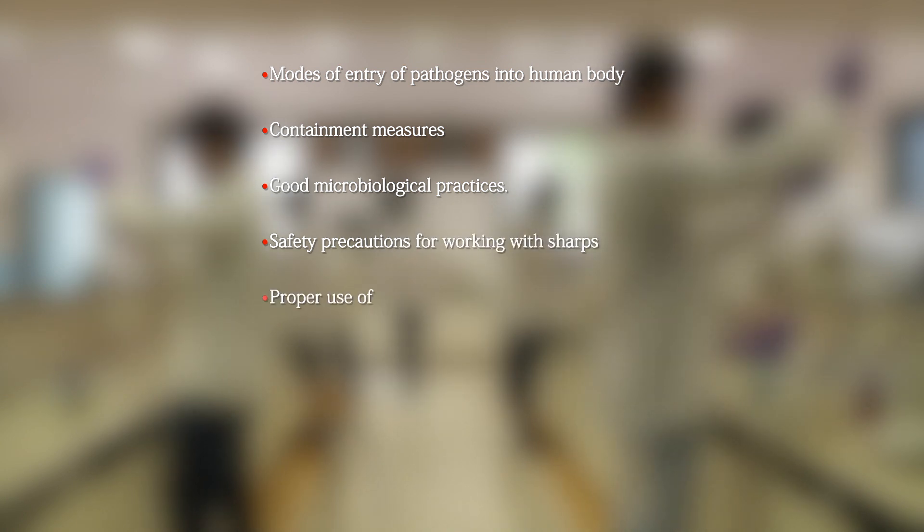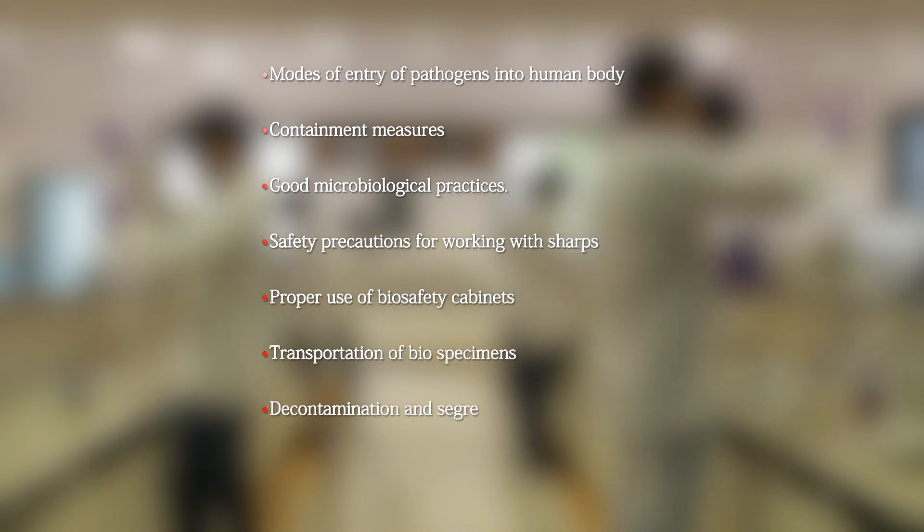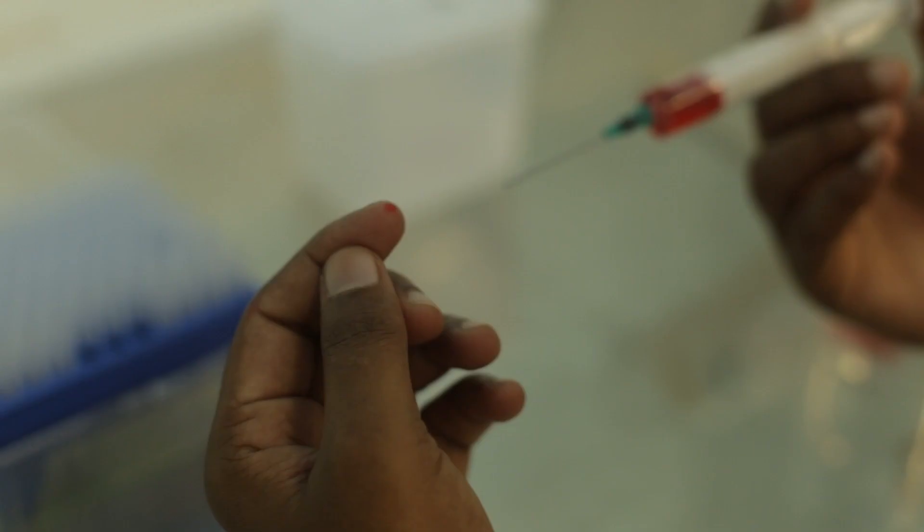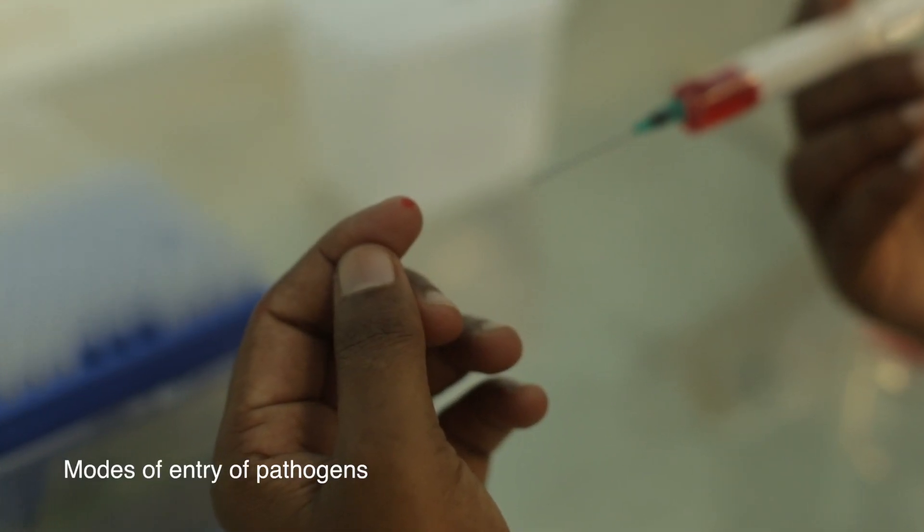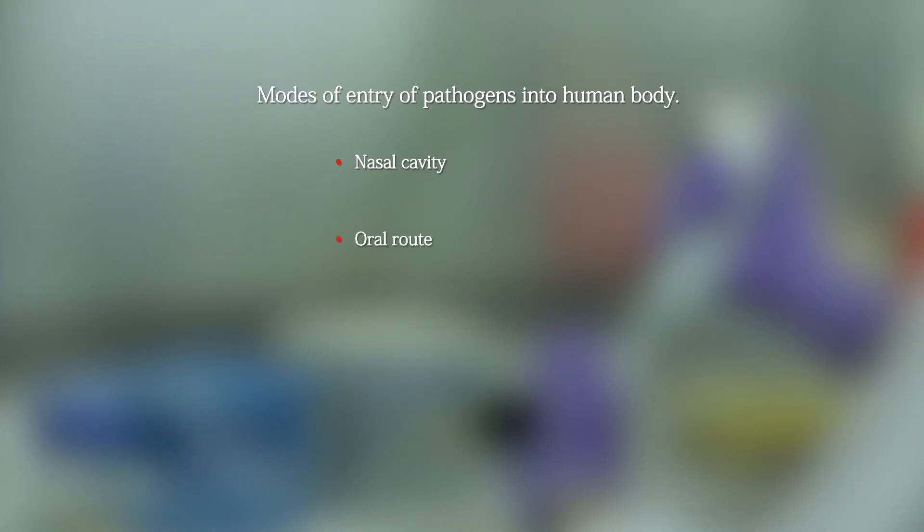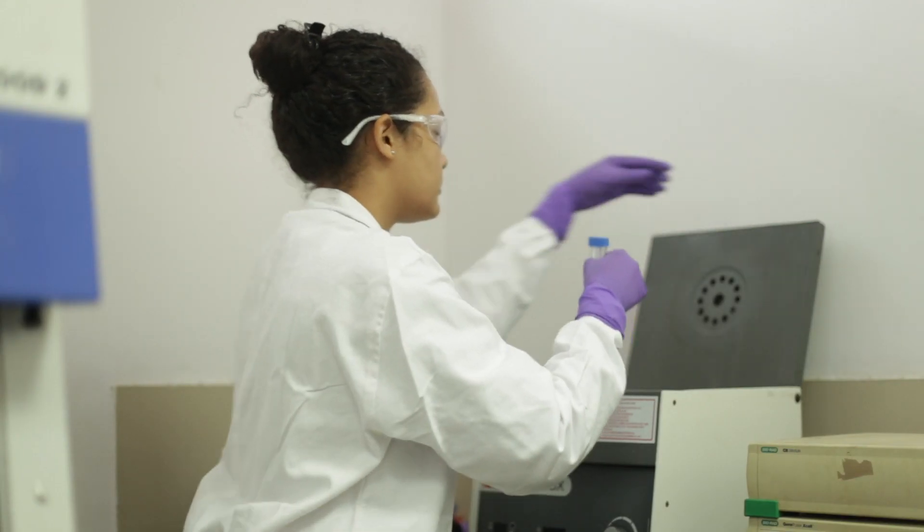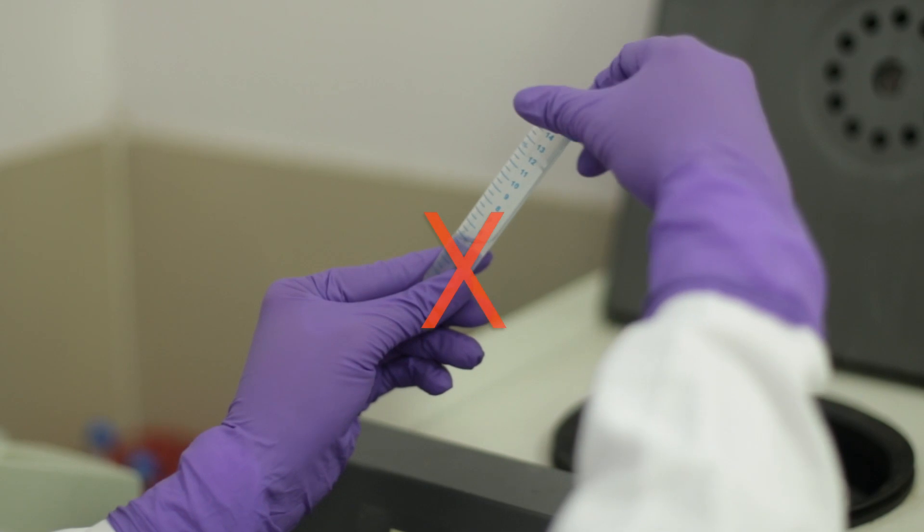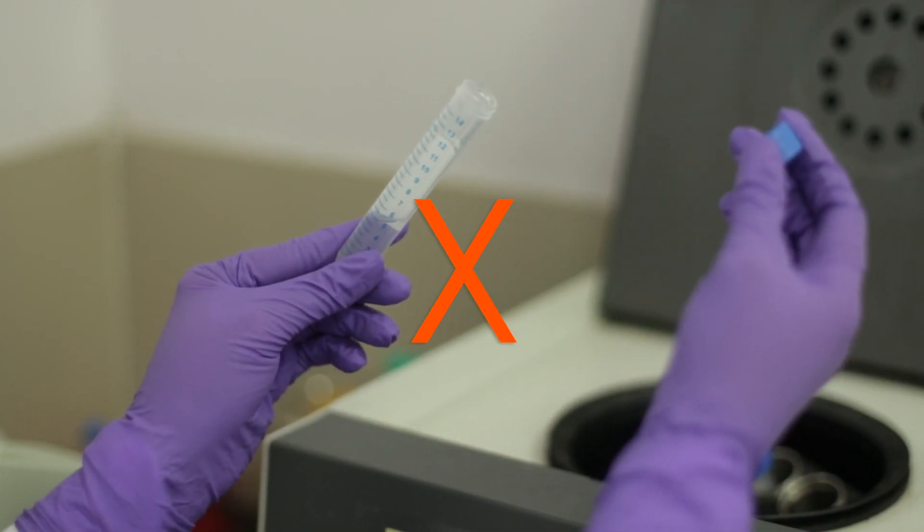Modes of entry of pathogens into the human body: Pathogens and infectious agents can be transmitted into the human body via the following routes: nasal cavity, oral route, open wounds, injuries on the skin, and splashes to the mucous membranes. Many activities like centrifuging, mixing, and streaking of agar plates can produce aerosols which are invisible to the eyes. The pathogens can enter the body if these aerosols are inhaled.